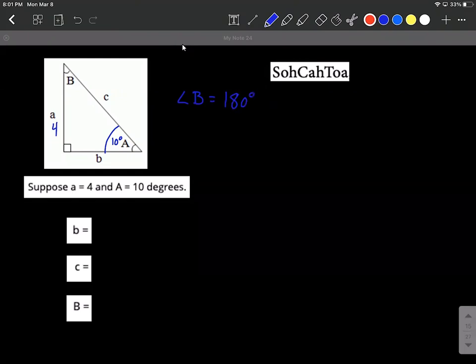So we can start with 180 degrees and subtract off the 10 degrees for angle A, and then our right angle is a 90 degree angle, so subtract off 90 degrees. That's going to leave us with 80 degrees at the end. So angle B is going to be 80 degrees.